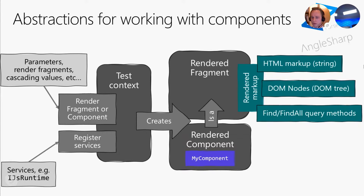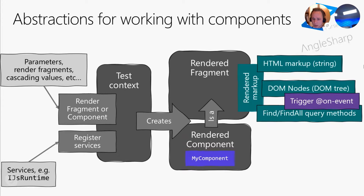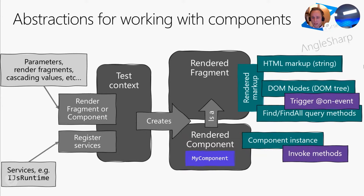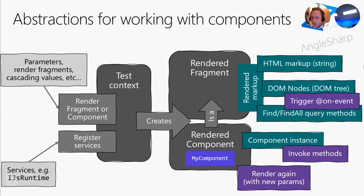There are also two helper methods for querying the DOM nodes — find and findAll — which both take a CSS selector as input and return DOM elements. Through the DOM elements, we get a convenient way to trigger any event handlers bound to them, for example the onClick event. Doing so triggers the C# method bound to the event and a re-render happens afterwards. The rendered component also gives us access to the component instance, where we can inspect public properties and invoke public methods. You can also render the component again with new parameters if you wish.